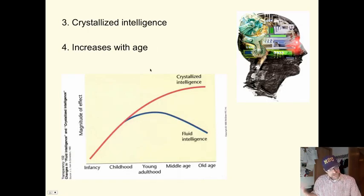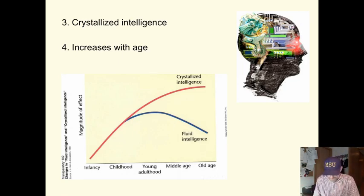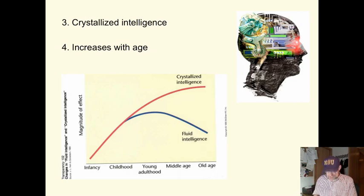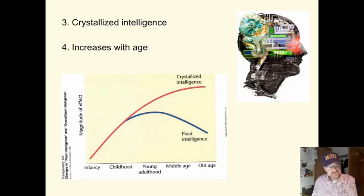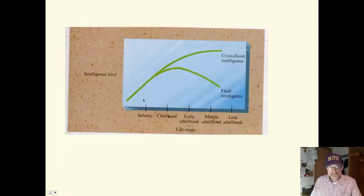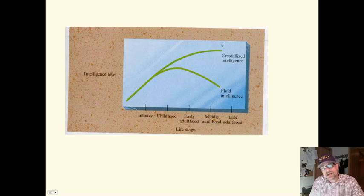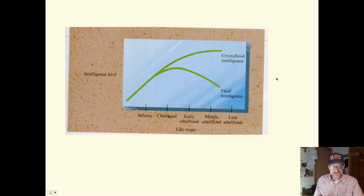As fluid intelligence decreases, crystallized intelligence increases, and they more than offset each other. Crystallized intelligence is an accumulation of one's knowledge — including declarative knowledge, vocabulary, basic information and concepts, but also procedures, skills, thinking strategies, and pattern recognition. This increases with age and more than compensates for any loss of fluid intelligence. As you can see in the graph, as fluid intelligence decreases, crystallized intelligence — knowledge, strategies, concepts, vocabulary — increases.